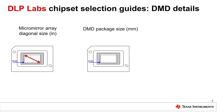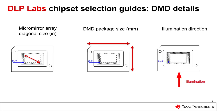The DMD package size is the height and width of the entire DMD package. Typically, the smaller the micromirror array diagonal size, the smaller the DMD package size. Illumination direction is the orientation of the illumination path relative to the micromirror array. The DMD can be illuminated from the side, bottom, or corner, depending on the micromirror design.